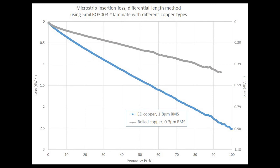Testing using 5 mil RO3003 laminate compared rolled copper (0.3 microns RMS surface roughness) against ED copper (1.8 microns RMS) on the exact same substrate. The insertion loss curves show a remarkable difference. At 60 GHz and 80 GHz there is a significant difference, though even the ED copper at about 2 dB per inch at 80 GHz is still considered very low loss and excellent performance. The rolled copper at 1 dB per inch at 80 GHz is even better. Both curves represent very good performance, but smoother copper clearly has much lower insertion loss.